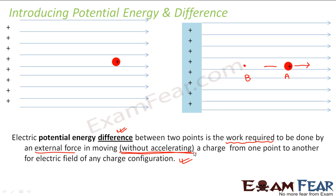You have a charged particle. There is a force F1 pulling it towards the right. Now if you apply another force F2 which is greater than F1 but towards the left, your charged particle will start moving towards the left and it will start accelerating because the force towards the left is much greater than the force towards the right.